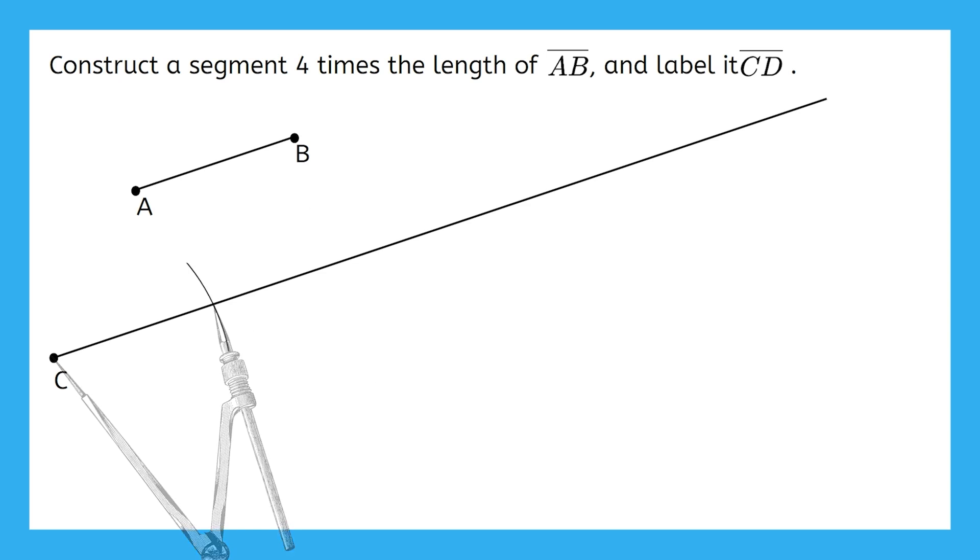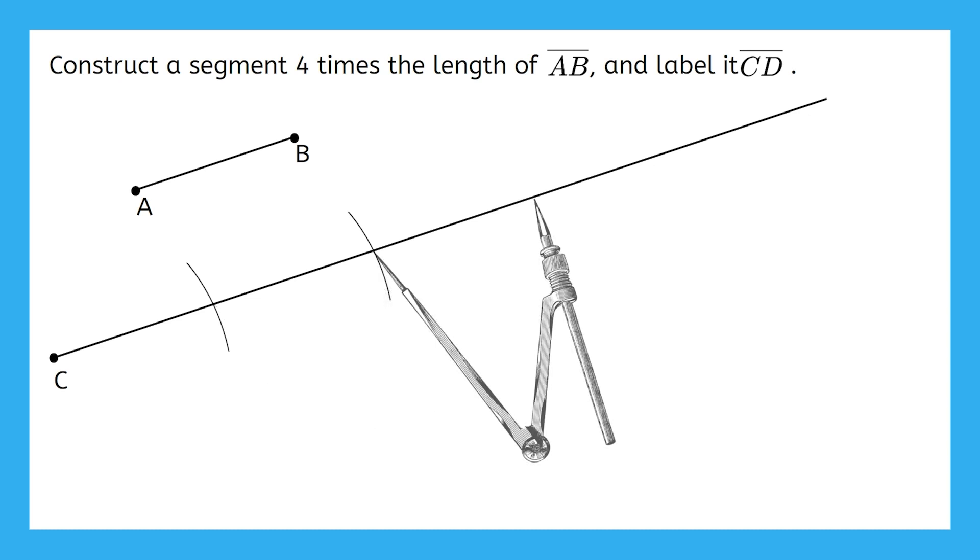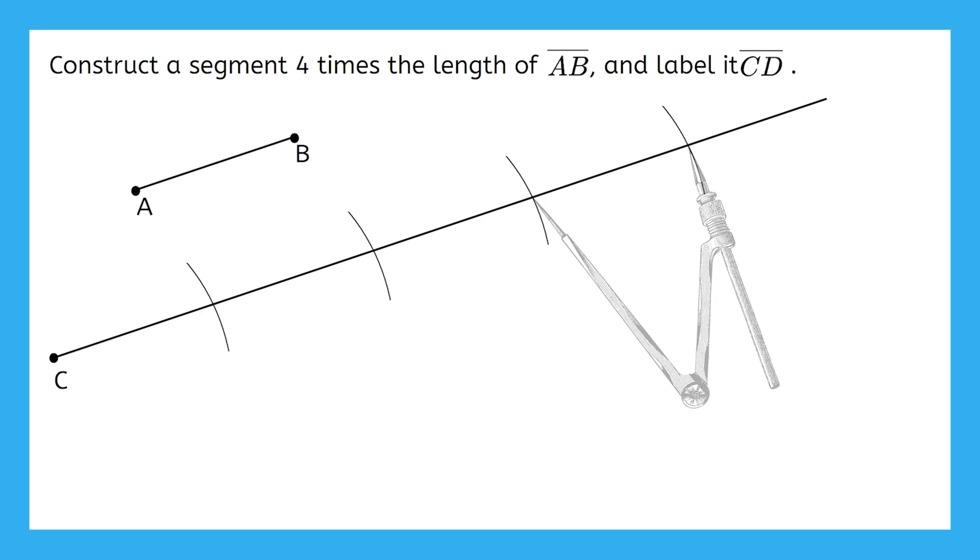Repeat this process three more times for a total of four arcs. Remember, you can draw entire circles with your compass but it'll add unnecessary clutter so small arcs are the best. Place point D where your final arc meets up with the line segment.